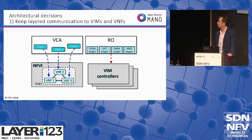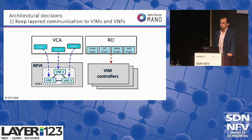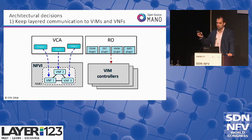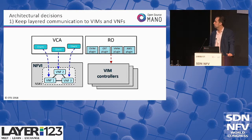One decision was to keep the communication to the lower levels — the VIM controllers and the VNFs — in the same way as before. The RO, the resource orchestrator, was the component in charge of provisioning virtual machines, and the VCA was in charge of hosting the logic for configuring the VNFs — that is what the charms are, which I will explain later. Both will continue to operate the same way.